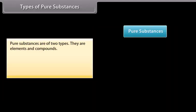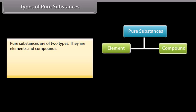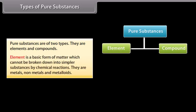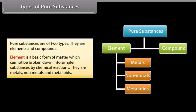Types of pure substances. Pure substances are of two types. They are elements and compounds. Element is a basic form of matter which cannot be broken down into simpler substances by chemical reactions. They are metals, non-metals, and metalloids.